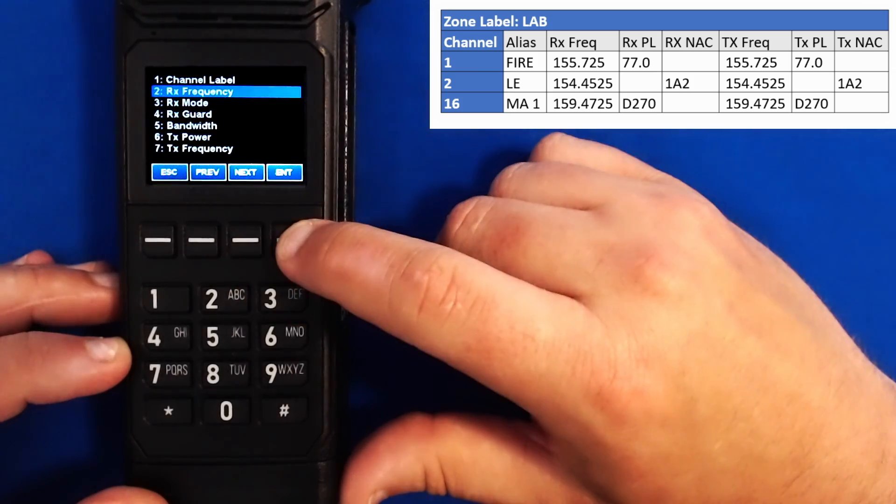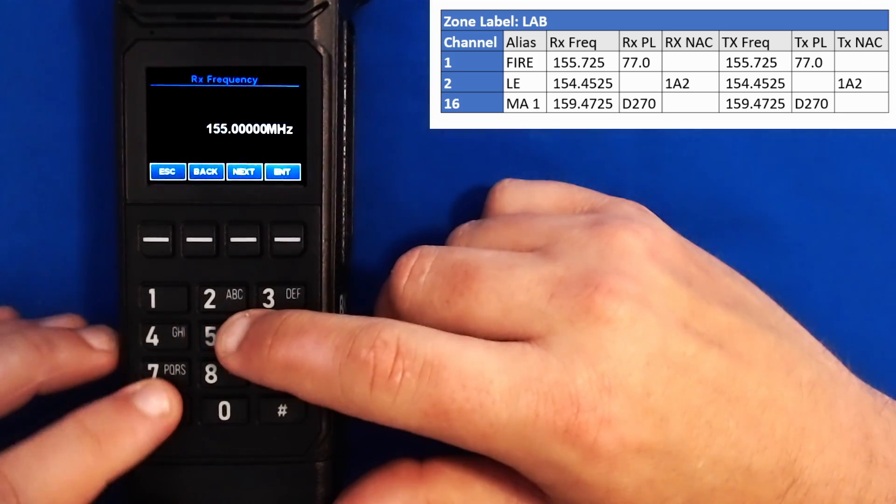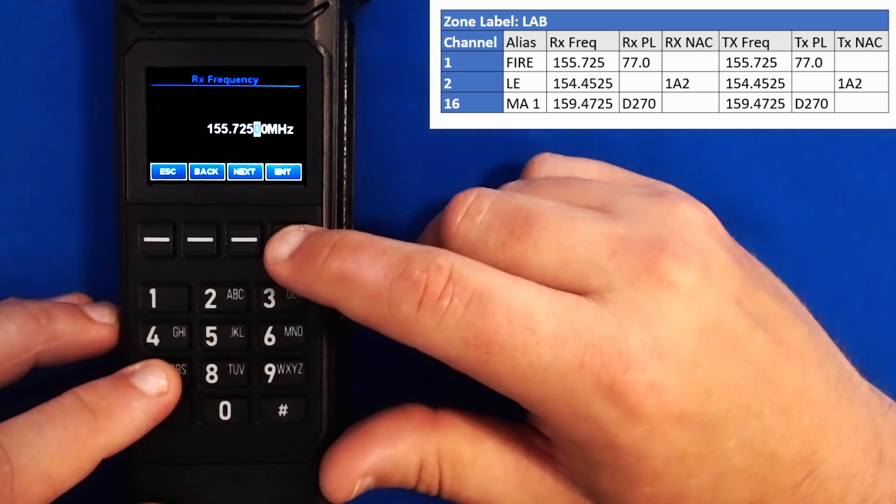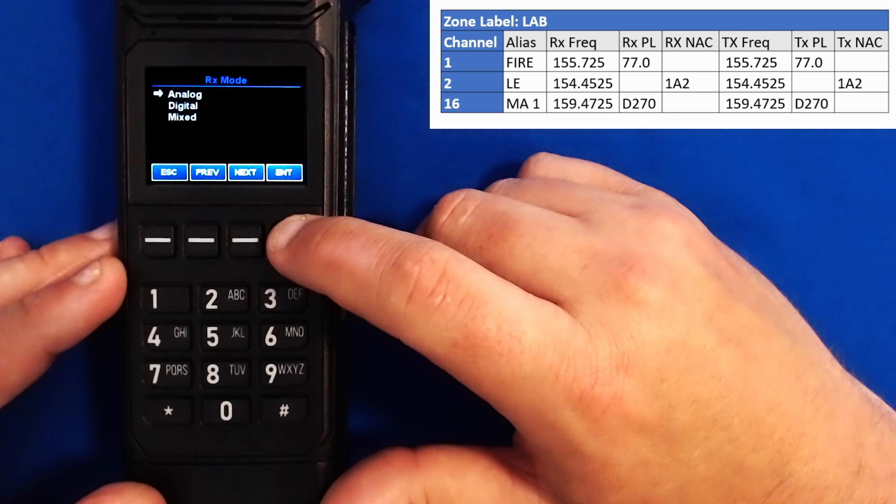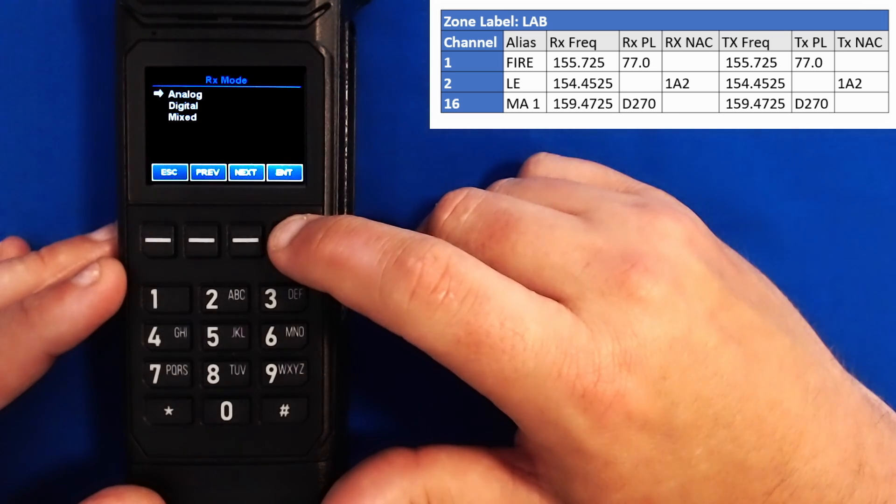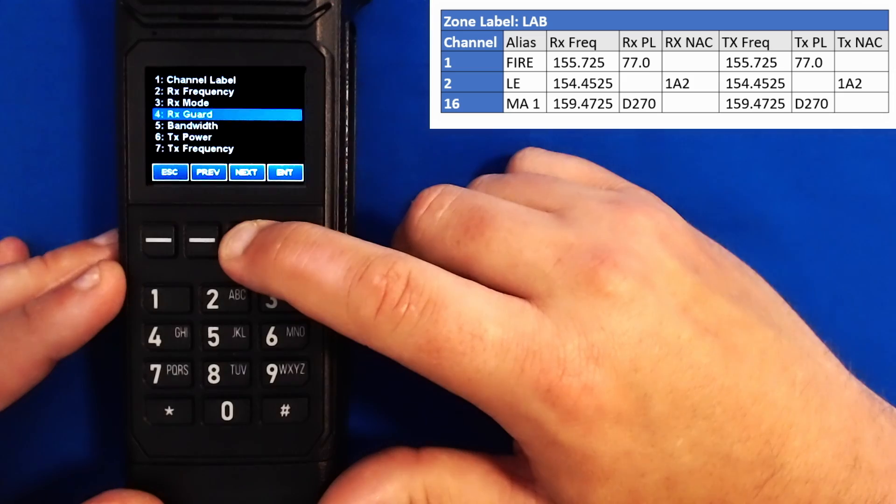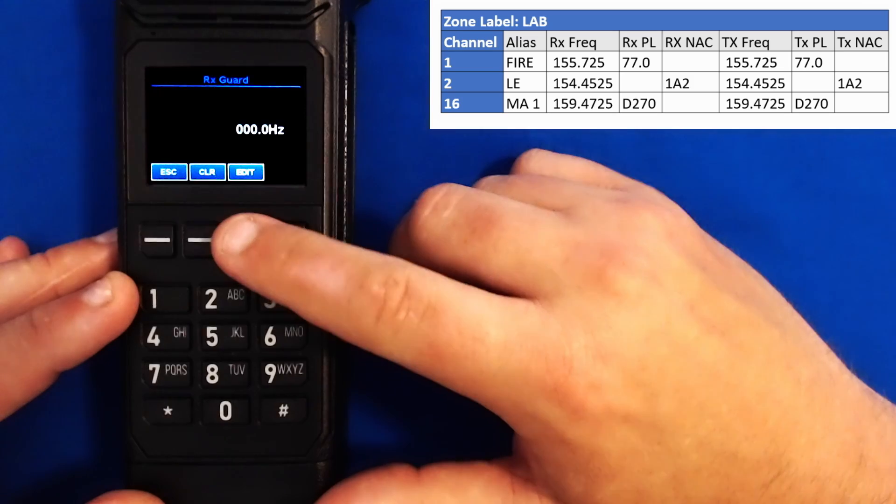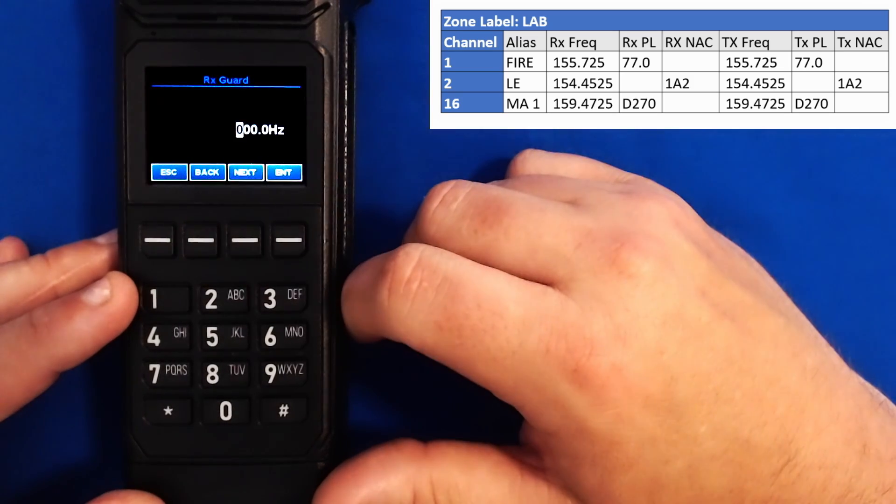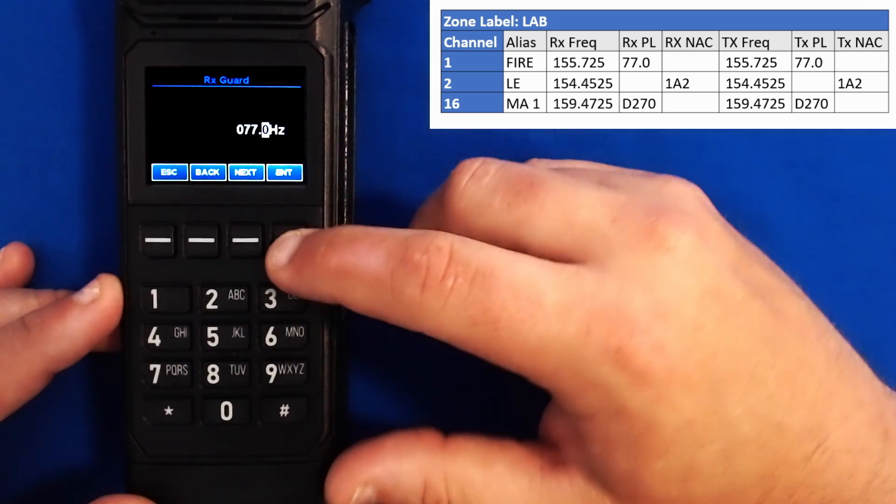I will go to the receive frequency mode. I'll press clear and type in 155725. Press enter. Go to my receive mode: analog, digital, or mixed. I look here and I see that this channel has been assigned an RX PL tone, or an RX code guard. This means that this channel is an analog channel. I'll go down to my receive guard. Select tone. Hit clear. And now I have to type in 77 hertz. But you'll see that it's a three-digit number. So I have to type in 077 and press enter.